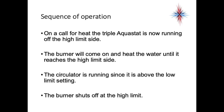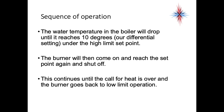On a call for heat, the triple aquastat switches over to run off the high limit side. The burner comes on and heats the water until it reaches the high limit setting — about 180 degrees. The circulator starts running as soon as the temperature gets above the low limit setting. The burner shuts off at the high limit, and the water temperature drops until it reaches 10 degrees below the high limit — about 170 degrees. The burner then comes on, reaches the setpoint again, and shuts off. This continues until the call for heat is over and the burner returns to low limit operation.